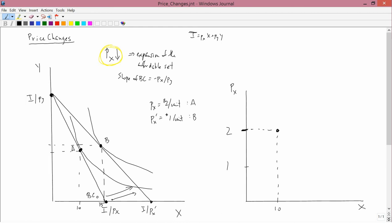Then, I want to graph the new situation with the lower price, and that's point B. The lower price is $1 a unit, and at point B, the X coordinate is 15. So I have a line like this.